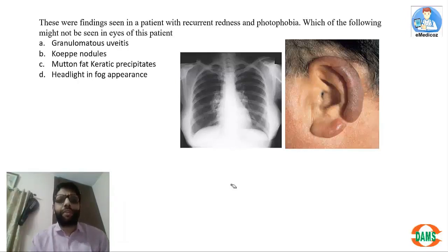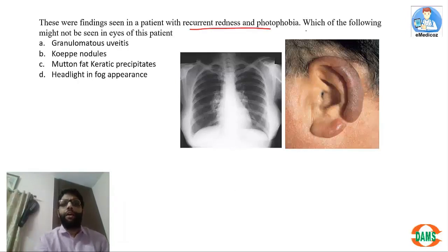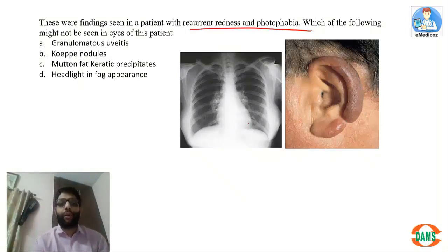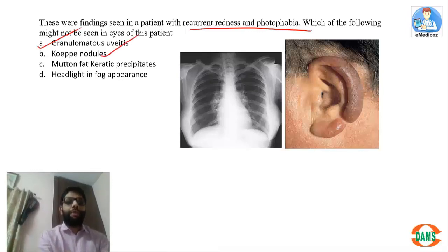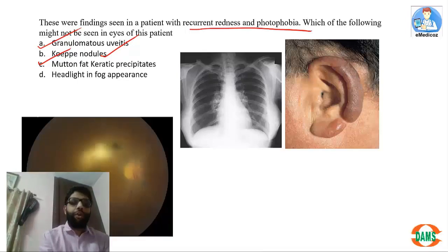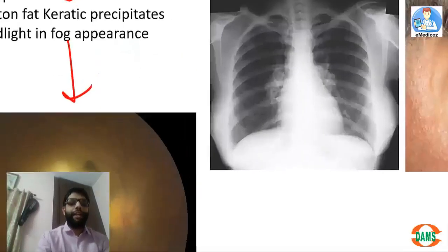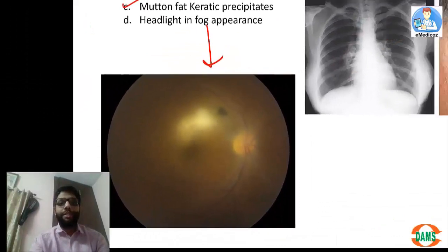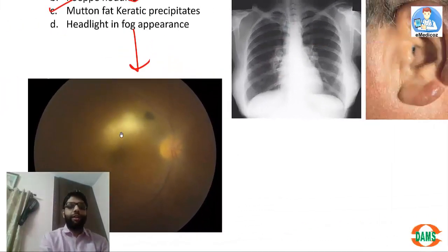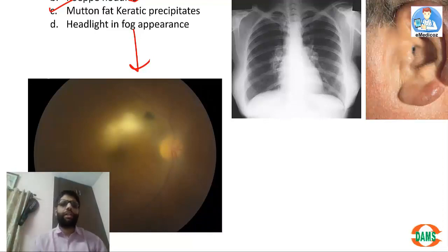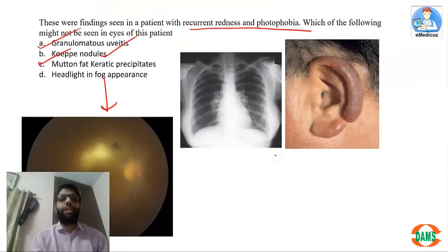The last question shows lupus pernio — this is sarcoidosis, a granulomatous uveitis. Koeppe nodules can be present, mutton-fat KPs can be present. However, 'headlight in fog' appearance is seen in toxoplasmosis, not sarcoidosis. In toxoplasmosis there is a single choroidal lesion looking like a headlight of a motorcycle or car coming through fog, with a lot of vitritis surrounding it. Therefore, headlight in fog is the finding NOT expected in sarcoidosis.